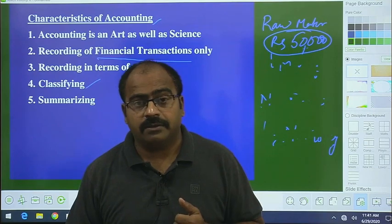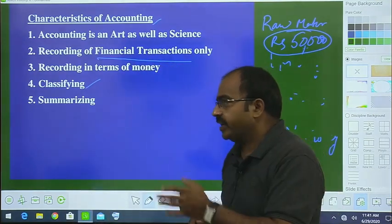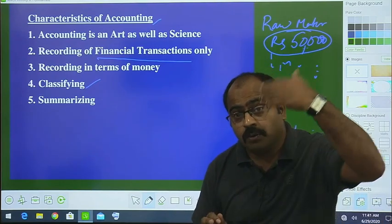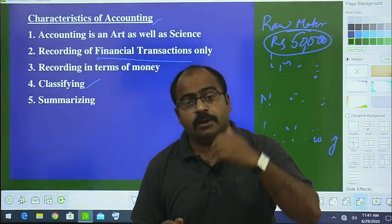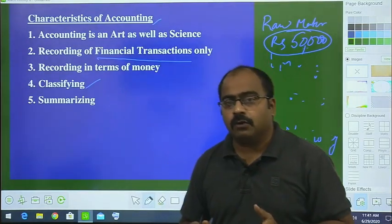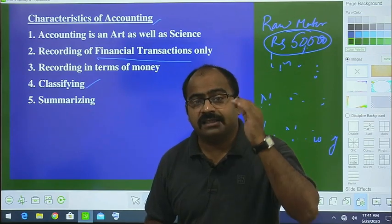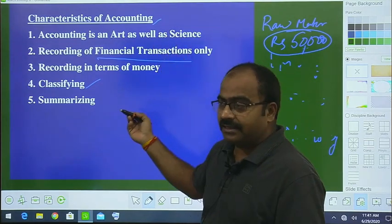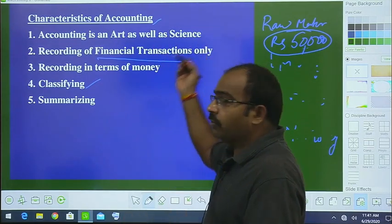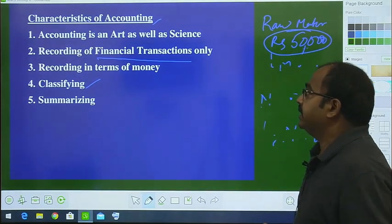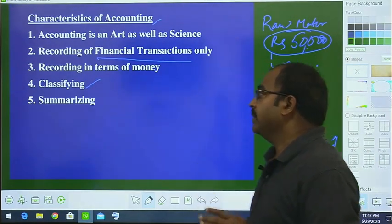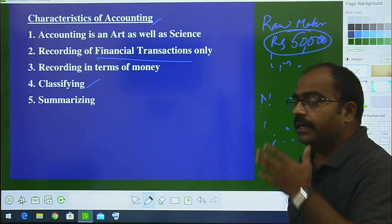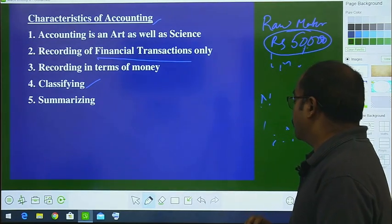What does summarizing mean? Whatever heads we have classified items into, now take the sum total of each. Total wages, total raw material cost — when we do the totaling of each head, that is considered as summarizing. So step by step: record the financial transaction, show it in terms of money, classify it under different heads, and finally create a summary.